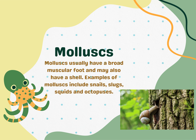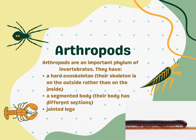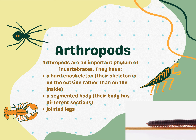Mollusks usually have a broad muscular foot and may also have a shell. Examples of mollusks include snails, slugs, squids, and octopuses. Arthropods are an important phylum of invertebrates. They have a hard exoskeleton — their skeleton is on the outside rather than on the inside — a segmented body where their body has different sections, and jointed legs.